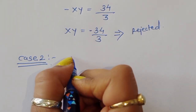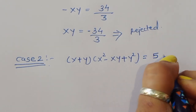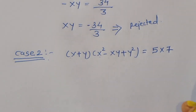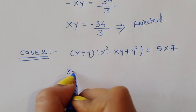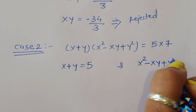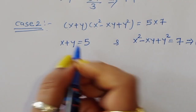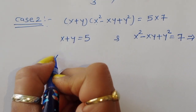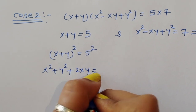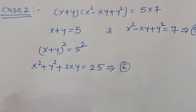Case 2: (x + y)(x² − xy + y²) = 5 × 7. So x + y = 5 (equation 5 equivalent) and x² − xy + y² = 7 (equation 5). We square x + y = 5: x² + 2xy + y² = 25 (equation 6).